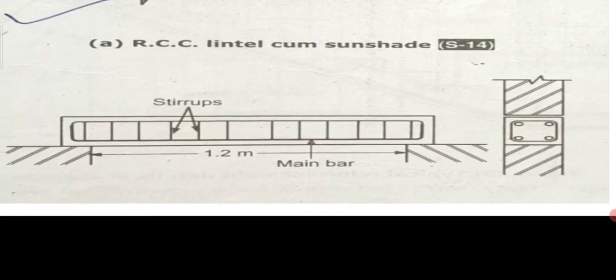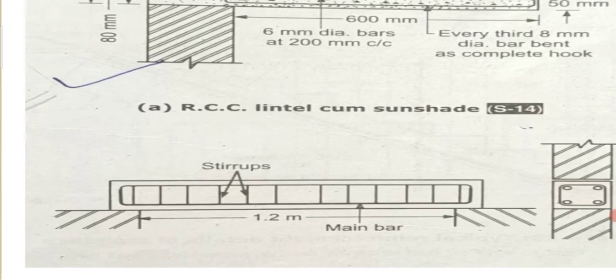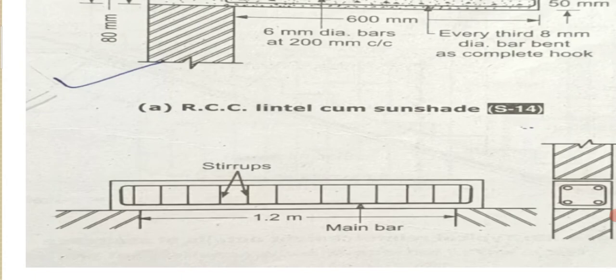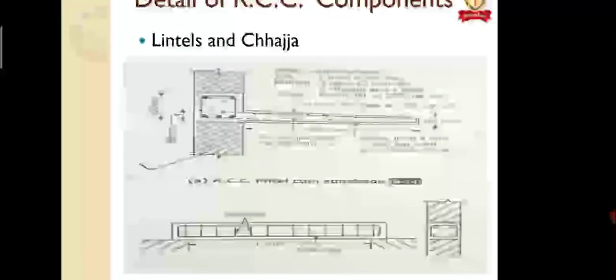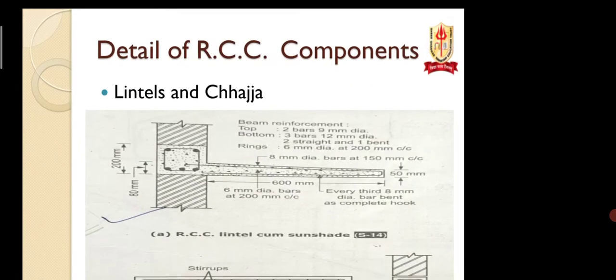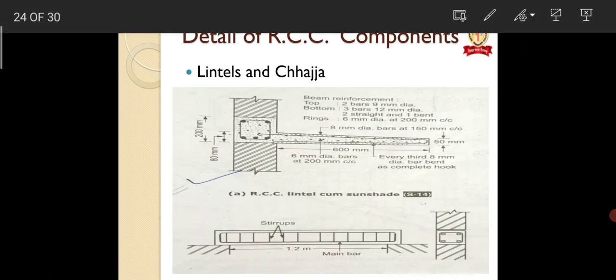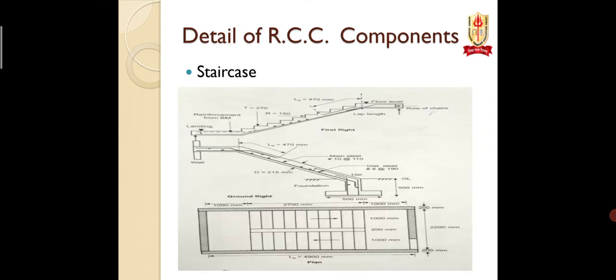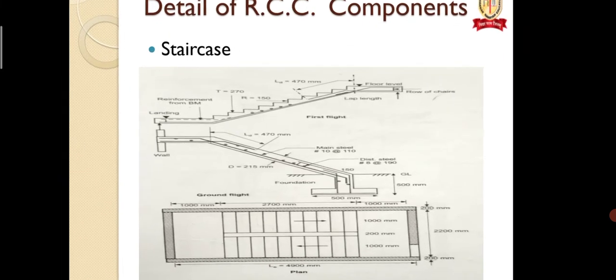The linton has stirrups and main bars. The linton is placed above doors and windows, so its length is about 1.2 meters. The bar description is mentioned alongside the cross-section. This is the cross-section of linton and chacha that we have to draw.